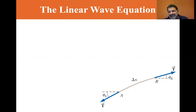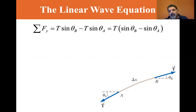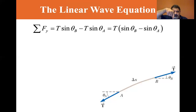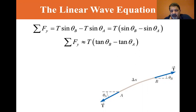We can see that the sum of the forces in the y-direction are T sine theta_B — that's the vertical component — minus T sine theta_A, which is the tension component going down. So the sum of them is equal to T sine theta_B minus sine theta_A.